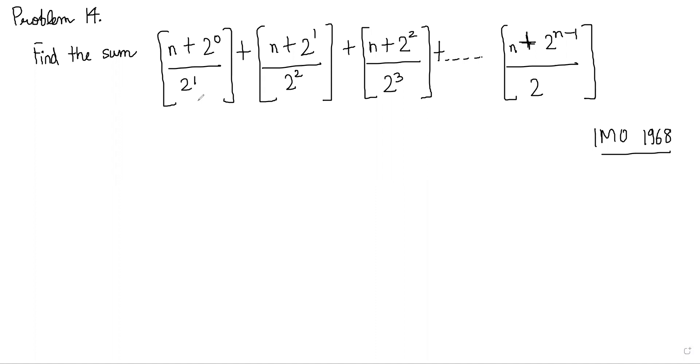Floor function plus n plus 2 to the power 1 by 2 squared, and so on till n plus 2 to the power n minus 1 by 2 to the power n. We have to find the sum of these floor functions. This problem actually appeared in IMO 1968.